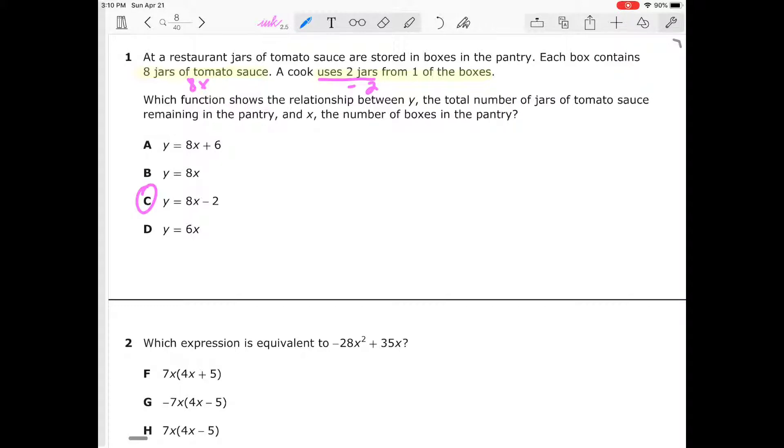Eight times the number of jars inside and minus the number of jars used - he used two. A won't work because there's nothing in our question representing six. B won't work because we're not talking about the jars that were already used. It could work if we weren't already subtracting two jars from the number of boxes. D, I don't know why they have six there, maybe a distractor - they're doing eight minus two. Your answer choice is C.